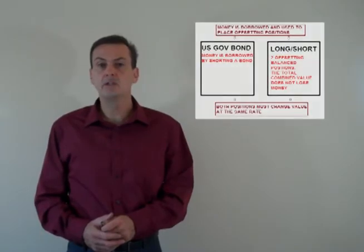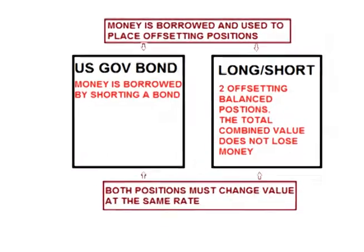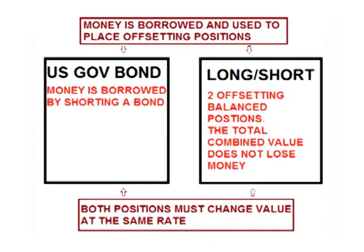In other words, one cannot set up a situation where one will make more money than a riskless fixed income investment without there being some risk of losing money. If that were not the case, one would be able to engage in riskless arbitrage.